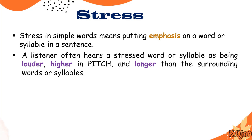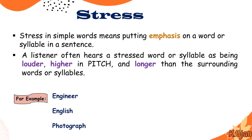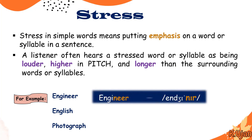Listeners usually hear the stressed part of a word as louder, higher in pitch, and longer than the surrounding words or syllables. For example, take the words 'engineer,' 'English,' and 'photographer.' When we say 'engineer,' we are putting stress on the second part of this word — 'neer' — and this symbol is the stress mark used to show emphasis.